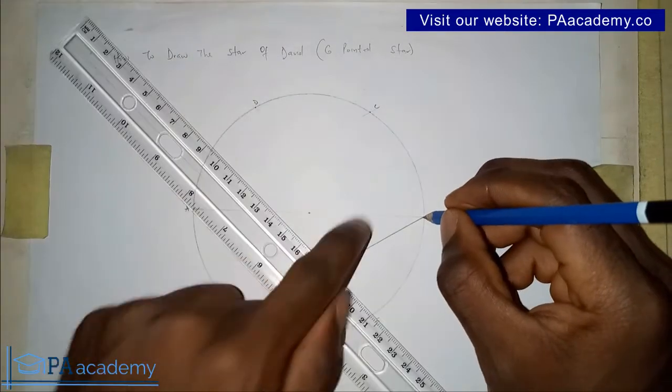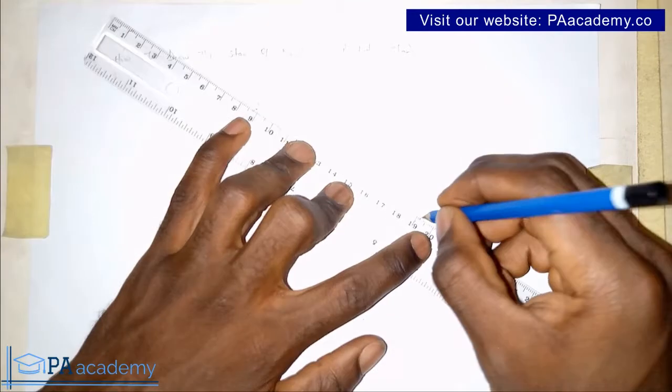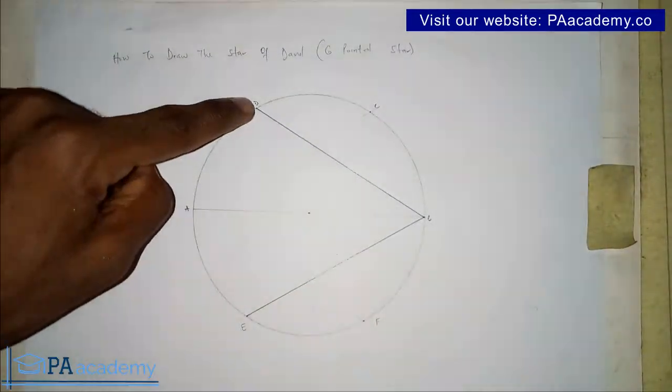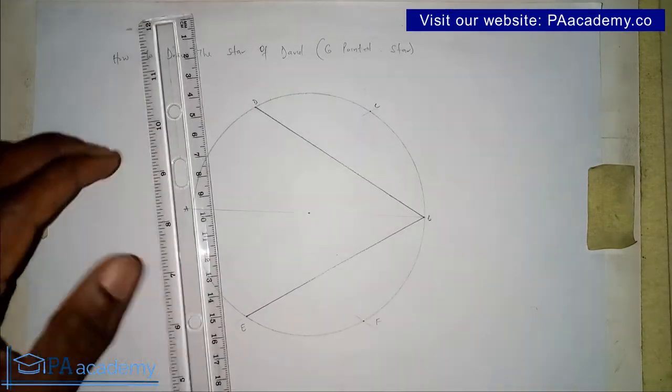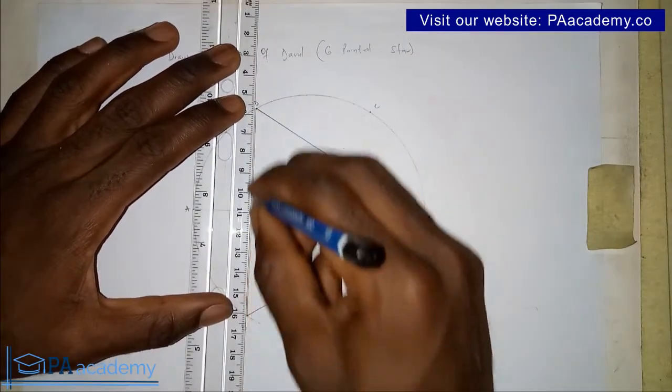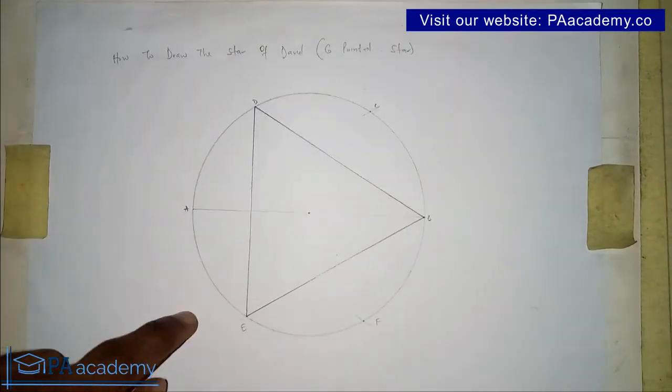From point B, you skip point C and draw a line to point D. Then from point D, you skip point A and draw a line to point E. Now we have something like this, like a triangle.